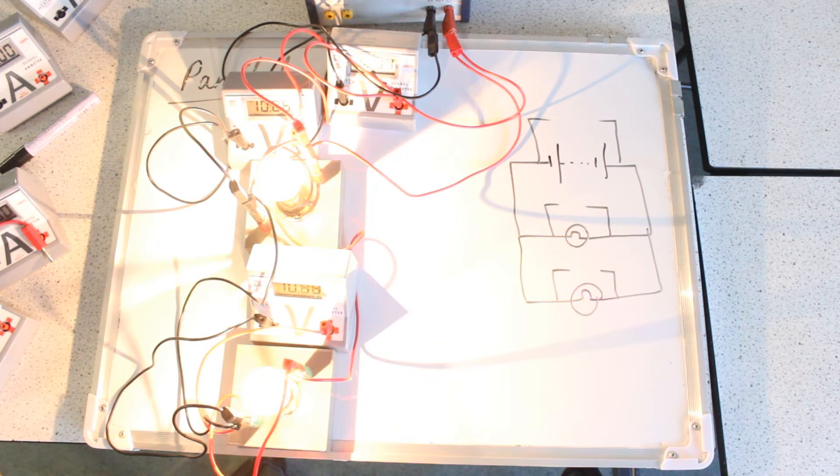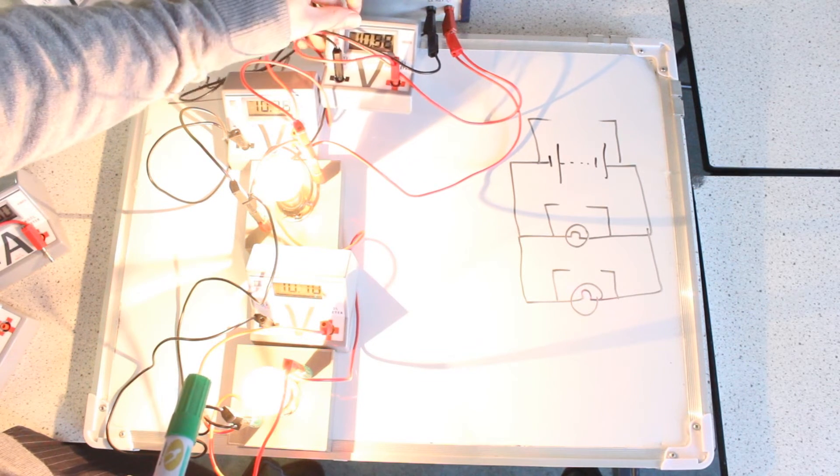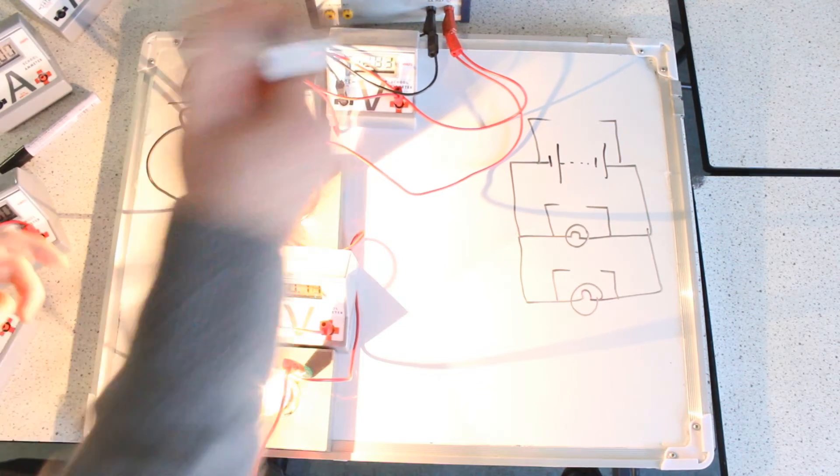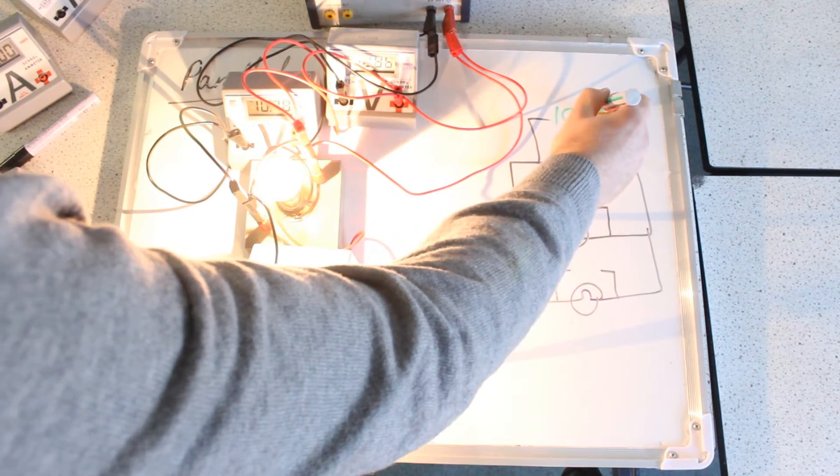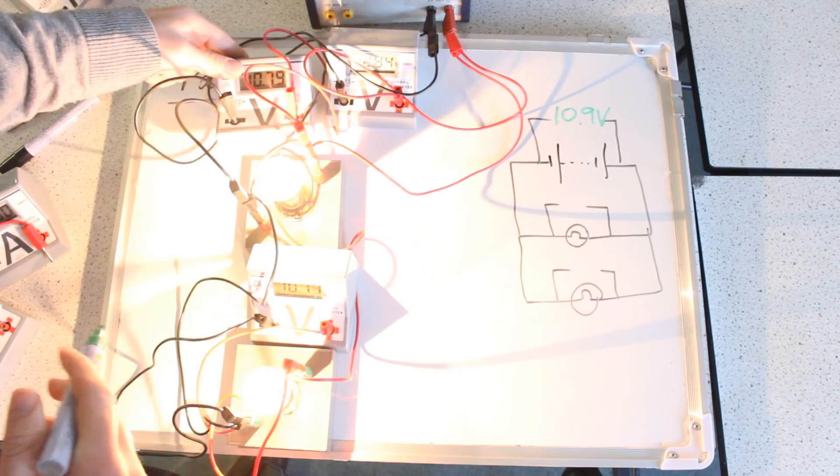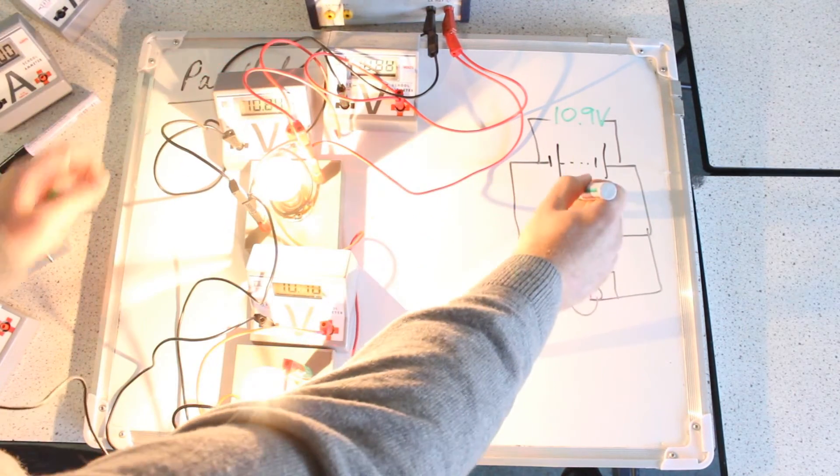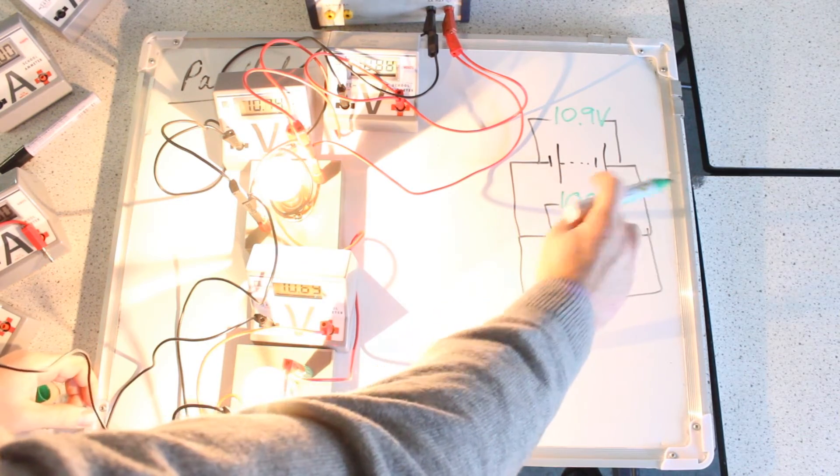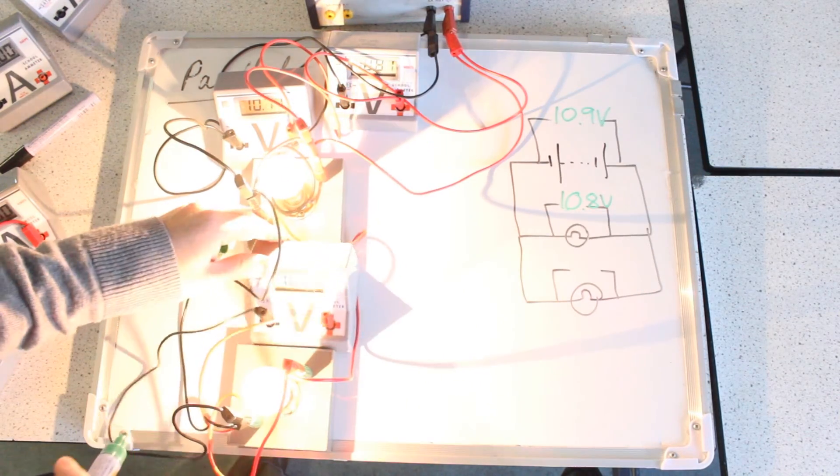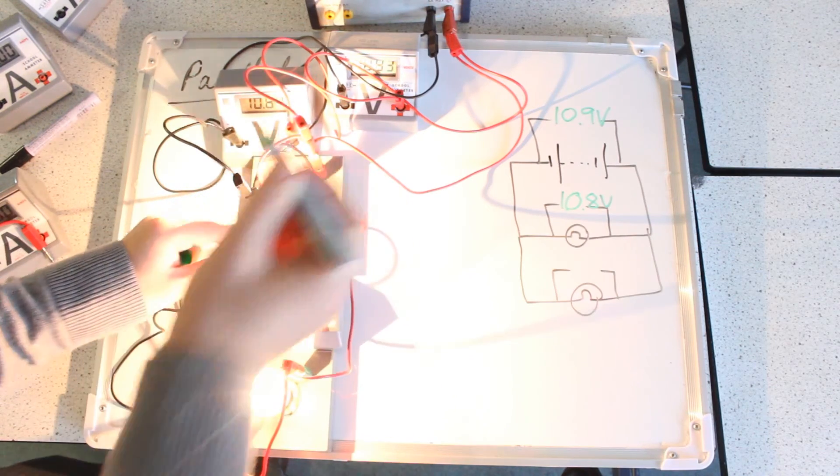So now I can see that this one is the voltage across my power supply, 10.9 volts. This one is the voltage across the first bulb, that's 10.8 volts. And here lastly, 10.7 volts.